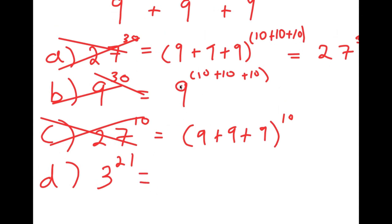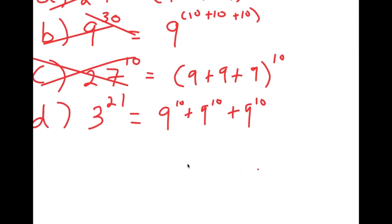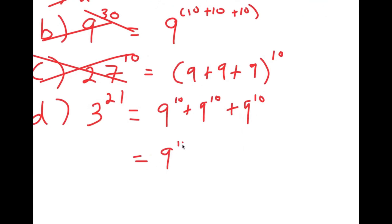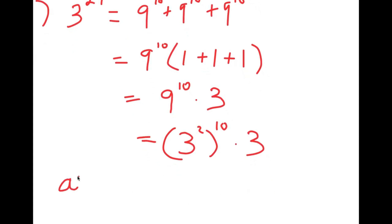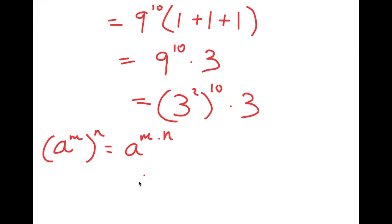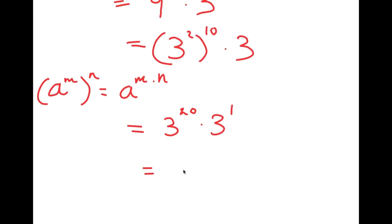Now 3 to the power of 21, which is by process of elimination the right answer — here's how we get it. We start with 9 to the power of 10 plus 9 to the power of 10 plus 9 to the power of 10, and factor out 9 to the power of 10. So we get 9 to the power of 10 times 1 plus 1 plus 1, which equals 9 to the power of 10 times 3. Now this equals 3 squared to the power of 10 times 3. Using the rule that a to the power of m to the power of n equals a to the power of m times n, we get 3 to the power of 20. Multiplied by 3 to the power of 1, we simply add the exponents, giving us 3 to the power of 21.